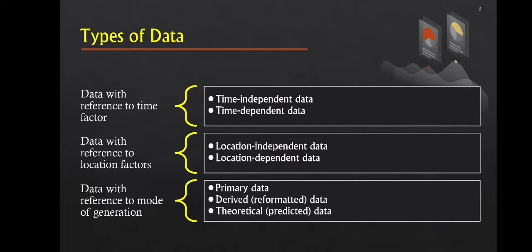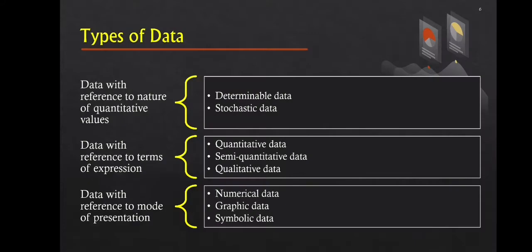Next we have data with reference to terms of expression. It has three categories. First is quantitative data — numerical representations of quantities represented in terms of well-defined units, converting a quality or magnitude to a numerical value. The majority of data in physical sciences is quantitative.